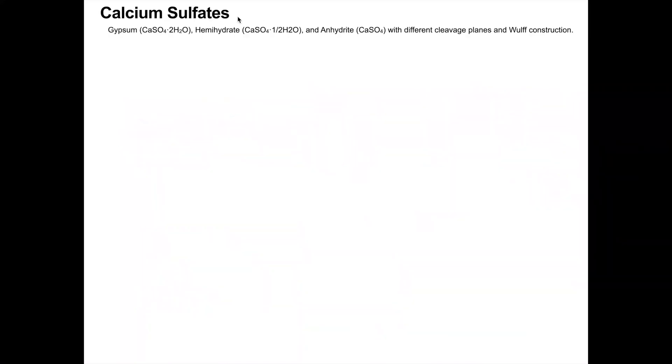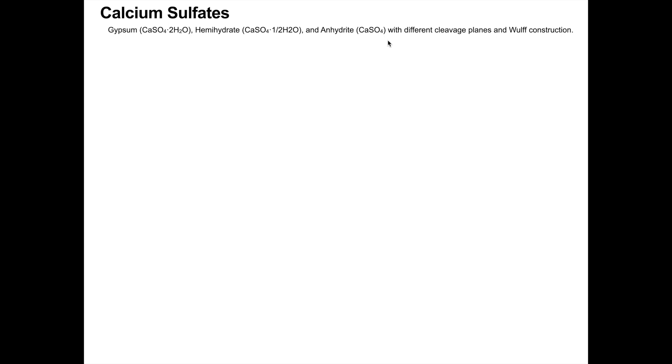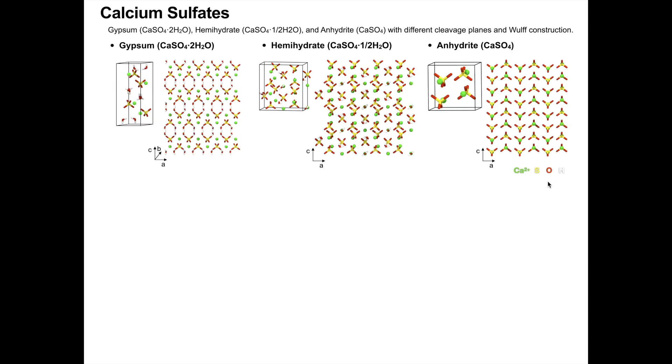The calcium sulfates class includes three hydration states which are gypsum, hemihydrate, and anhydrate. The cement minerals tricalcium silicate and tricalcium aluminate are supported as well.